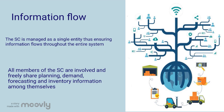Since the supply chain is managed as a single entity within the company, information flows throughout the entire system. All members of the supply chain are involved and freely share planning, demand forecasting, and inventory information among themselves. This fluid information flow ensures collaboration in drawing up production, marketing, and shipment plans.